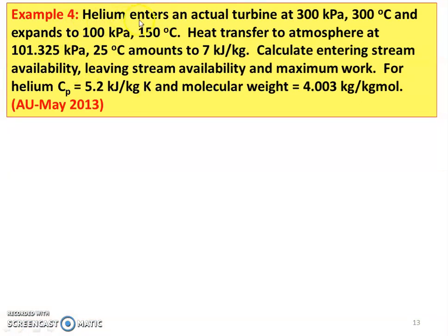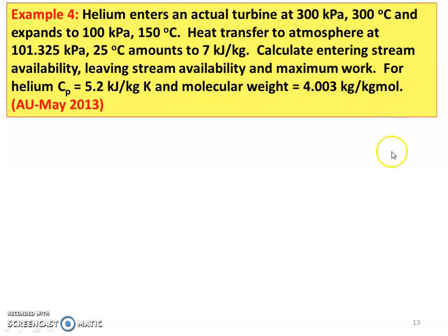Example number 4: Helium enters an actual turbine at 300 kPa, 300 degree Celsius and expands to 100 kPa, 150 degree Celsius. Heat transfer to the atmosphere at 101.325 kPa, 25 degree Celsius amounts to 7 kJ per kg. Calculate entering stream availability, leaving stream availability and maximum work. For Helium, CP equal to 5.2 kJ per kg kelvin and molecular weight is 4.003 kg per kg mol.